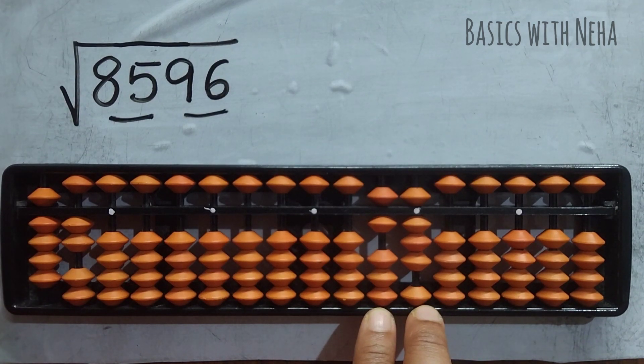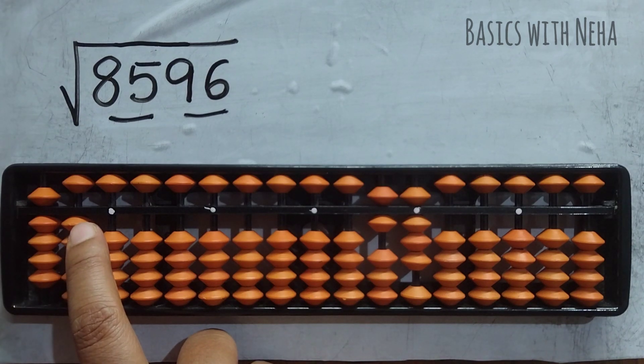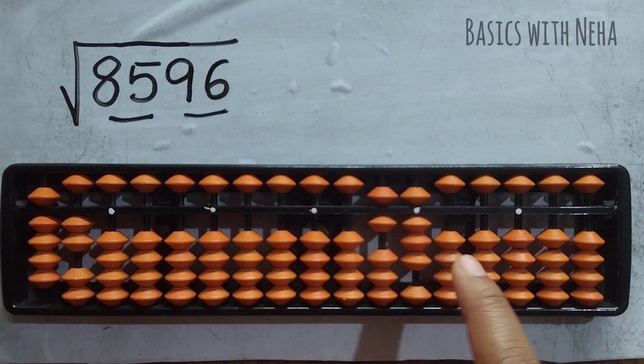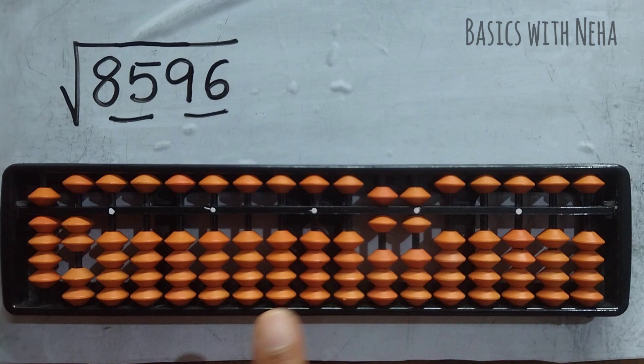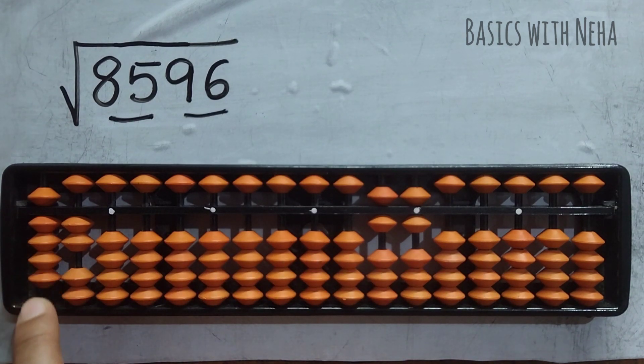Now I'm done with these two rods. Now I have to do these two rods. I have to consider these two rods. Now I have to square this number. 2, 2 squared is 4. 4 half is 2. I'm going to remove two beads from here. This is one step, one process. It is done. And I already have an answer which is 92.